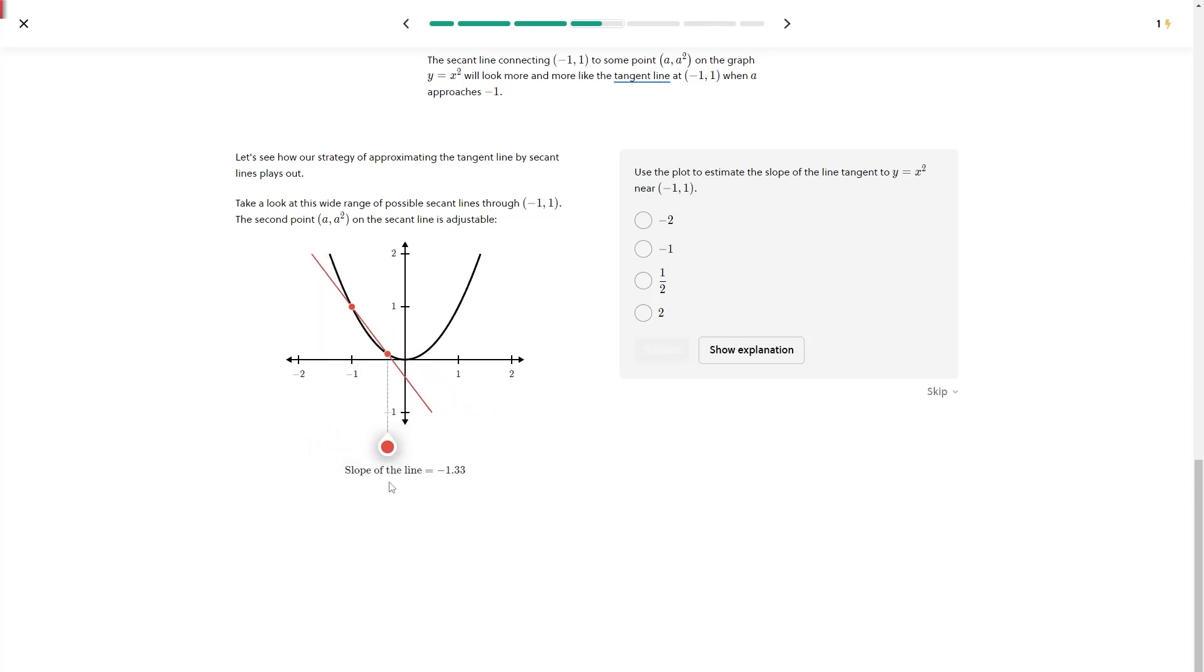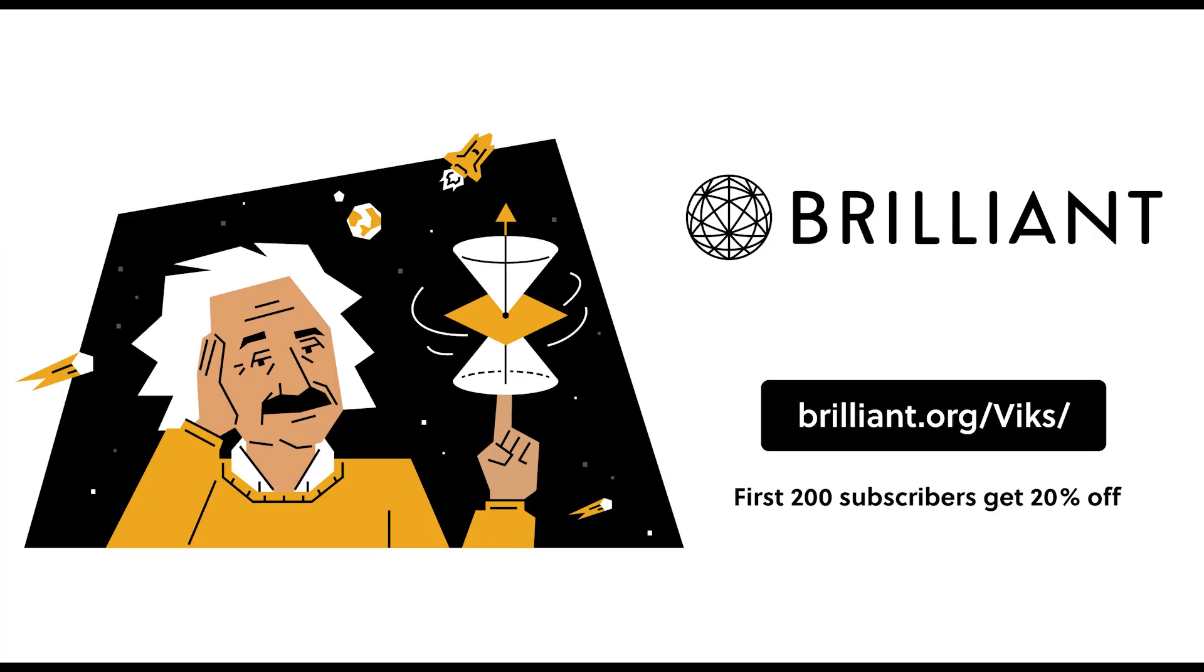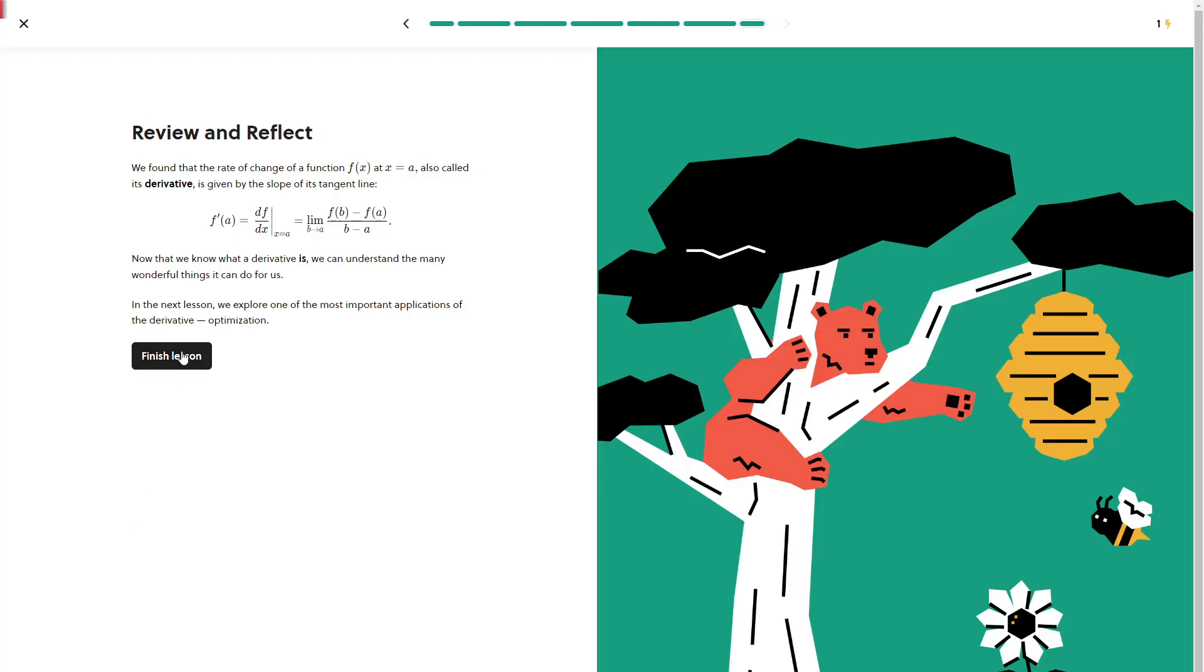To try everything Brilliant has to offer for free for 30 days, consider visiting brilliant.org/vix, which is in the description and the pinned comment, which will give you full access to all of Brilliant's courses. Only the first 200 subscribers to use the link will get the full 20% discount off Brilliant's annual premium subscription.